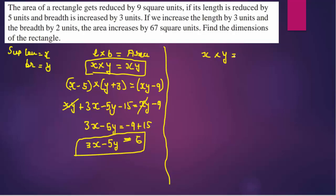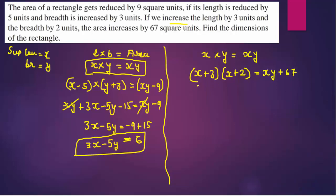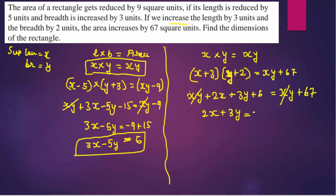For the second condition, we write (x plus 3) into (y plus 2) equals xy plus 67. Expanding: xy plus 2x plus 3y plus 6 equals xy plus 67. The xy terms cancel, and moving 6 to the right side gives 2x plus 3y equals 61. So equation number two is 2x plus 3y equals 61.